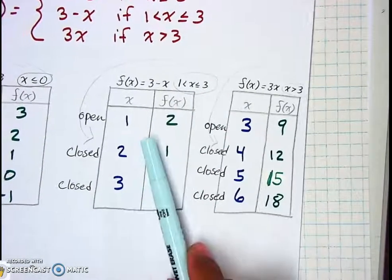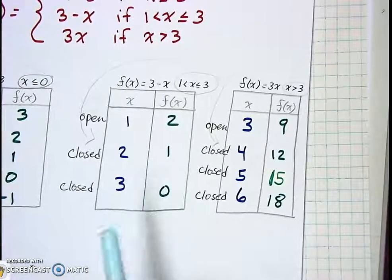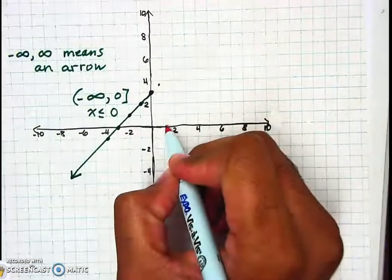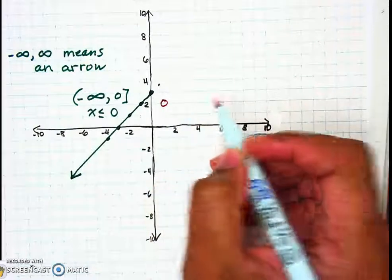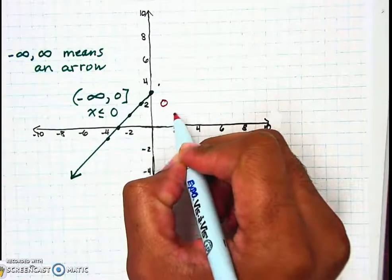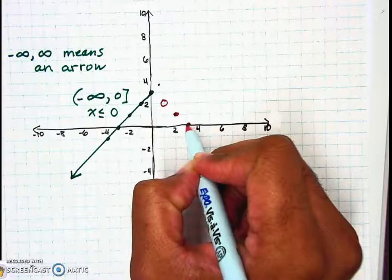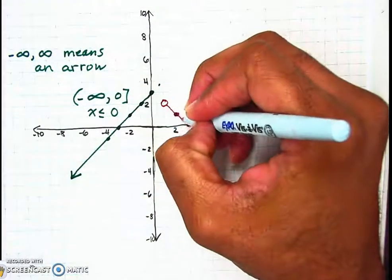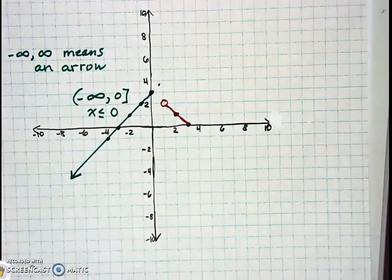For the second piece, we plot (1, 2), (2, 1), and (3, 0). Point (1, 2) is an open circle, (2, 1) is closed, and (3, 0) is closed. We connect those points to form a line segment.